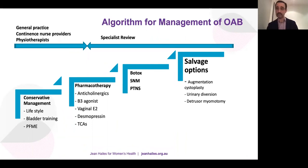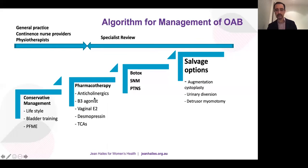This OAB management algorithm is based on AUGS and AUA guidelines. First-line management is conservative: lifestyle modifications, bladder training, pelvic floor muscle exercises. If no improvement after three to six months, move to pharmacotherapy: anticholinergics, beta-3 agonists, vaginal oestrogen, desmopressin, or TCA (though TCA is less commonly used now). If two medications fail, or the patient cannot tolerate them or afford them, move to advanced therapies: Botox injection into the bladder, sacral neuromodulation (an implantable pulse generator placed in the buttock with a lead beside the third sacral nerve root), or PTNS. If these fail, salvage options are augmentation cystoplasty or diversion — very significant, highly morbid surgeries.